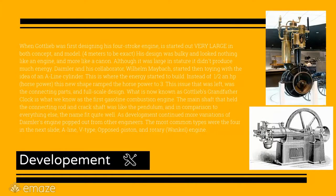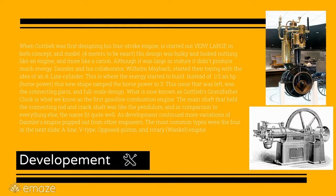When Gottlieb was first designing his four-stroke engine, this started out very large — in both concept and model — about four meters to be exact. His design was bulky and looked nothing like an engine, more of a cannon. Although it was large in structure, it didn't produce much energy.